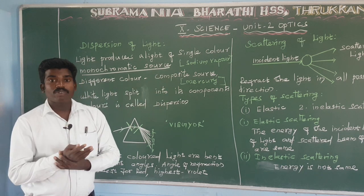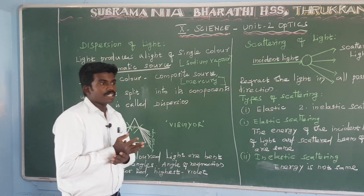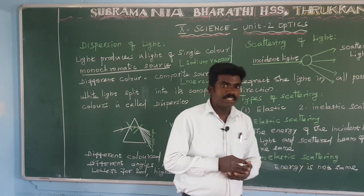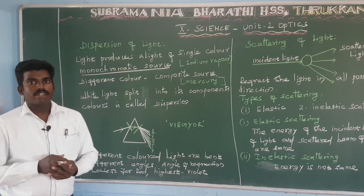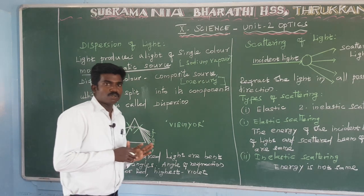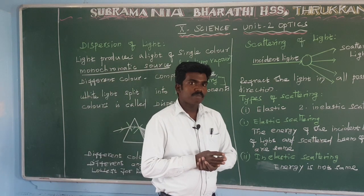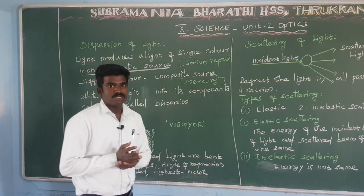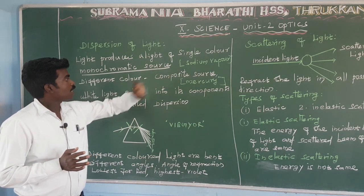A composite source produces light of different colors. The sun is an example of a composite source — sunlight produces different colors. Mercury vapor lamp also produces light of different colors, so white light from a mercury vapor lamp is also an example of a composite source.